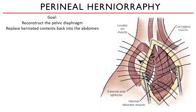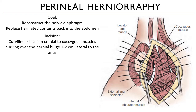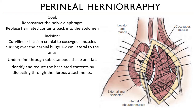The goal of a perineal herniorrhaphy is to reconstruct the pelvic diaphragm and replace the herniated contents back into the abdominal cavity. A curvilinear incision is made cranial to the coccygeal muscles, curving over the hernia bulge one to two centimeters lateral to the anus. Be prepared for bleeding and address this through gentle pressure and cautery. Undermine through the subcutaneous tissue and fat, identifying the herniated contents and dissecting them from their fibrous attachments if present. This is a very careful procedure since some fibrous attachments tend to be very tough and could tear through the serosa of the organs.